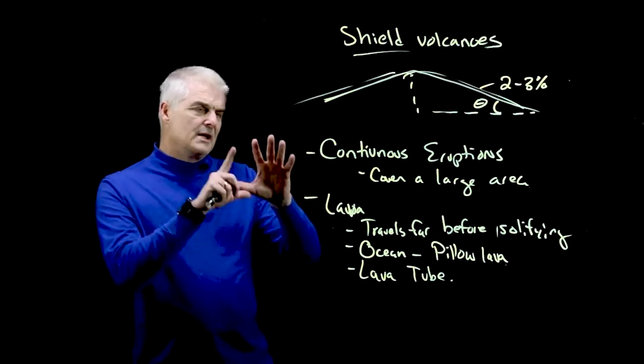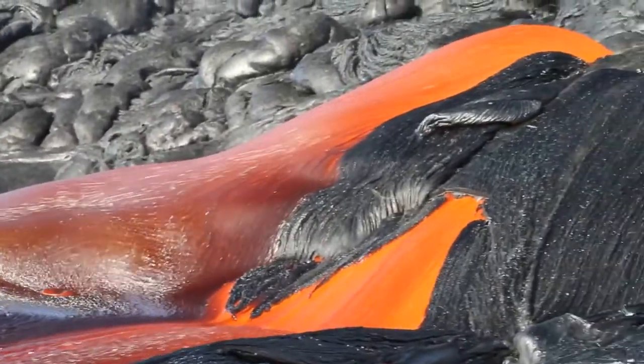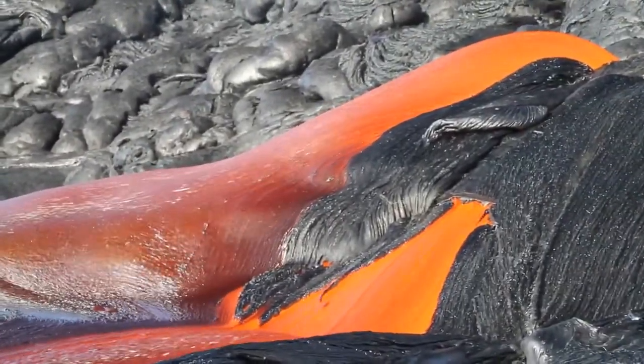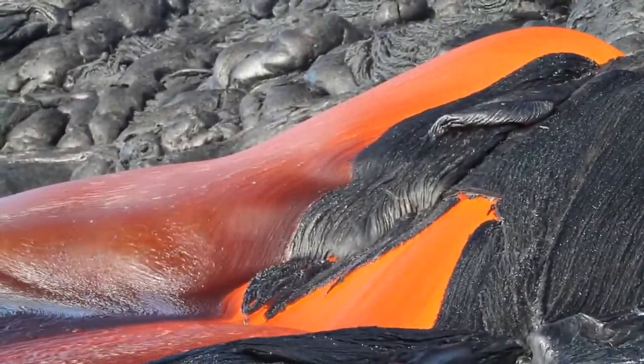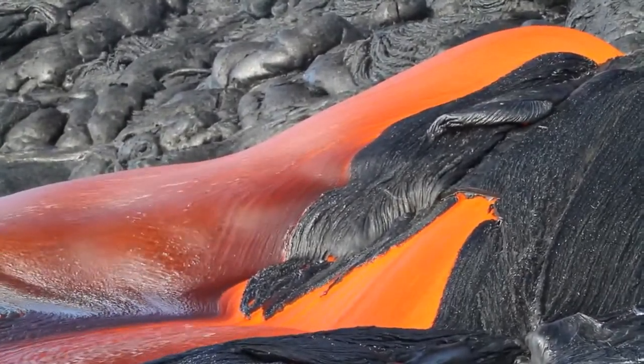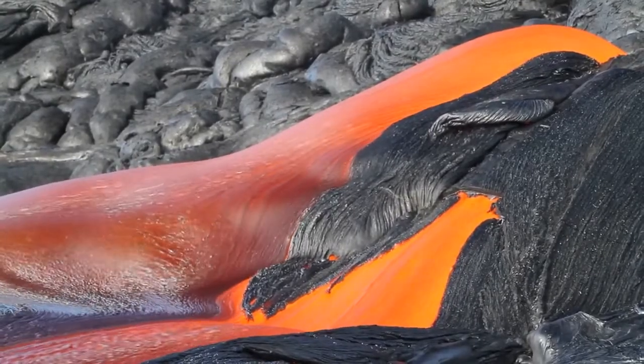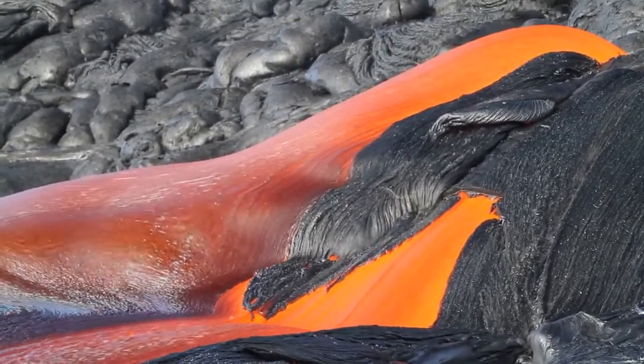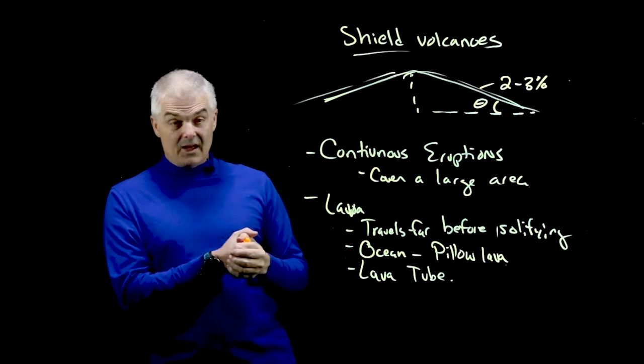So how does a lava tube form? In the image that you're now looking at, notice what you've got is you've got stuff solidifying on the outside because it's cooler on the outside. And then the lava continues to flow through the bottom, or through the center if you will. And when it's all done you're left with boom, the lava tube.